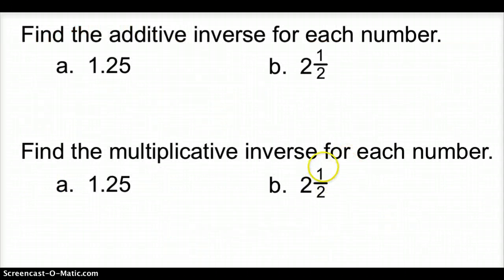Now let's go ahead and find the additive inverse of each number. So all the additive inverses remember we want to get this to be equal 0. So what do we have to add to that number? Well we would add negative 1.25 or negative 1 and 25 hundredths. Same thing for B we want to get 2 and a half to be 0. What would we have to add to 2 and a half? We would have to add a negative 2 and 1 half.